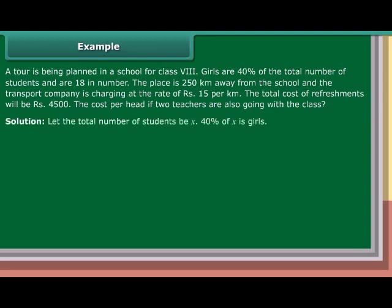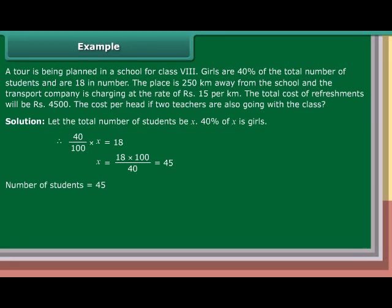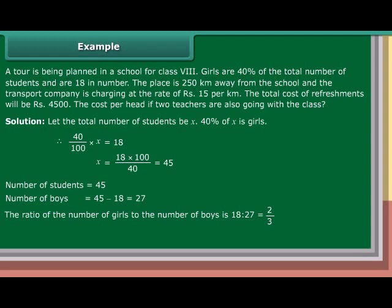Solution: Let the total number of students be X. 40% of X are girls. Therefore, 40 upon 100 into X equals 18. X equals 18 into 100 upon 40, which equals 45. Number of students equals 45. Number of boys equals 45 minus 18, which is 27. The ratio of the number of girls to the number of boys is 18 is to 27, which is equal to 2 is to 3.